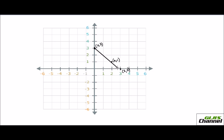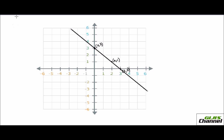Now use your ruler and join the points. Extend the line as much as possible — this is your linear line. I've just plotted this and I can write that this line represents the equation x plus y equals 3.